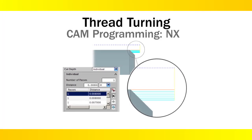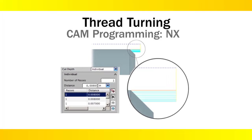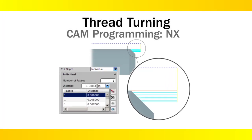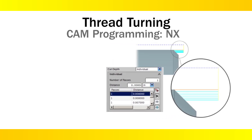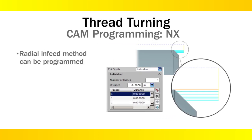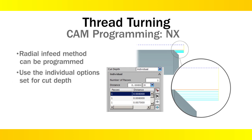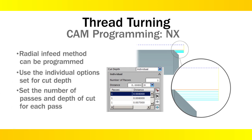While there is no canned operation to program the flank and incremental infeed methods in NX, the radial infeed method can be programmed with a decreasing depth per pass using the individual option set for cut depth within the threading operation. Set the number of passes and depth of cut for each pass according to values in the Sandvik Coromant Threading Calculator.